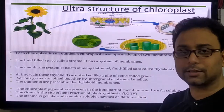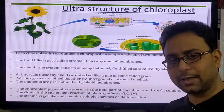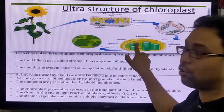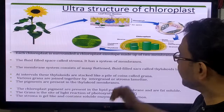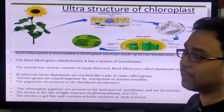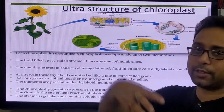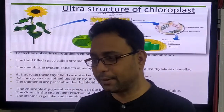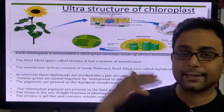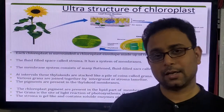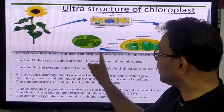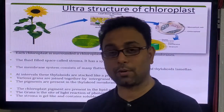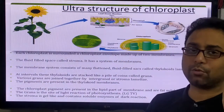Now we discuss the structure of the chloroplast. It is a double membrane structure — two membranes. The liquid part of the chloroplast is called the stroma. Inside the stroma, a disc-like structural part called the thylakoids is present, and when they are joined together, the grana are formed. Photosynthesis occurs in two steps: light reaction and dark reaction. Light reaction takes place in the grana, and dark reaction takes place in the stroma.